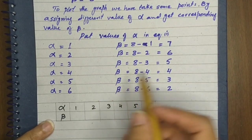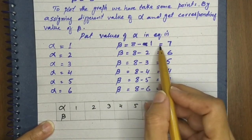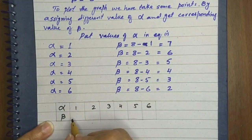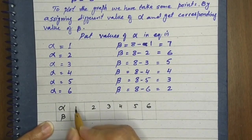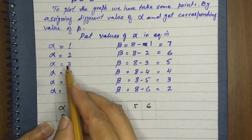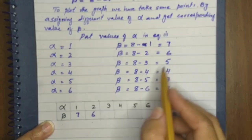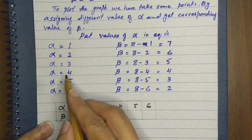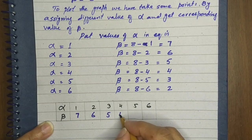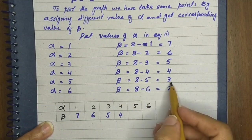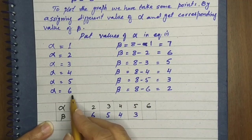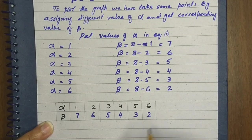When alpha is 1, then beta is 7. When alpha is 2, then beta is 6. When alpha is 3, then beta is 5. When alpha is 4, then beta is 4. When alpha is 5, then beta is 3. When alpha is 6, then beta is 2.